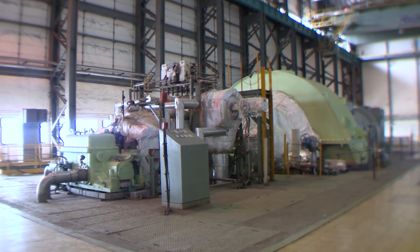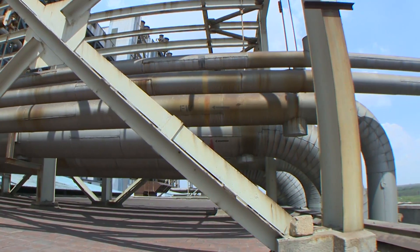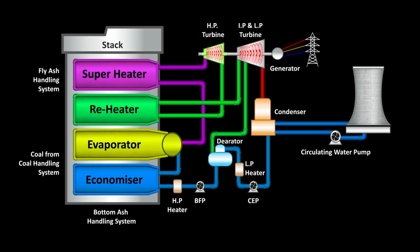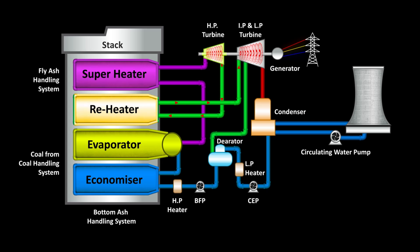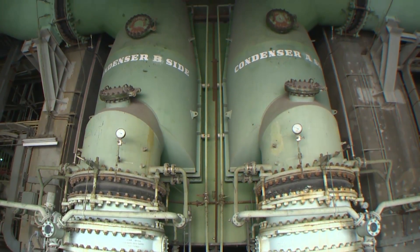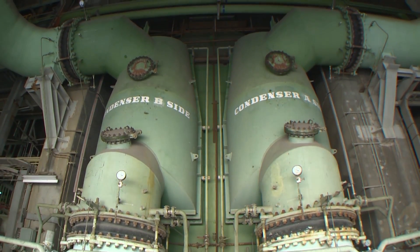Boiler supplies superheated steam to HP turbine through main steam lines. After the work is done, the exhaust from HP turbine reaches the reheater arranged in the boiler through cold reheat lines. The reheated steam is taken to IP turbine through the hot reheat line. Then the steam expands in IP and LP turbines.